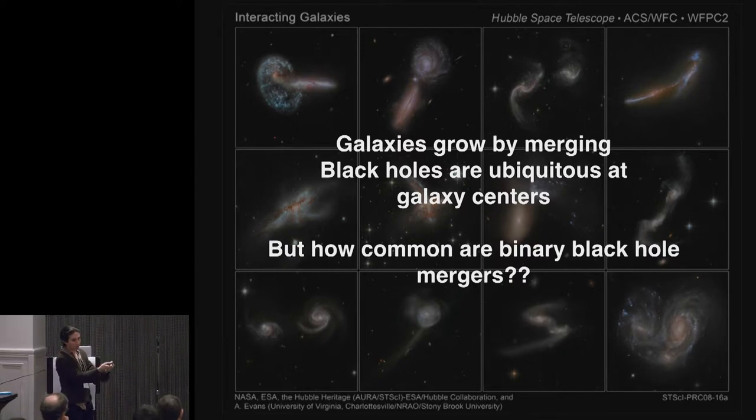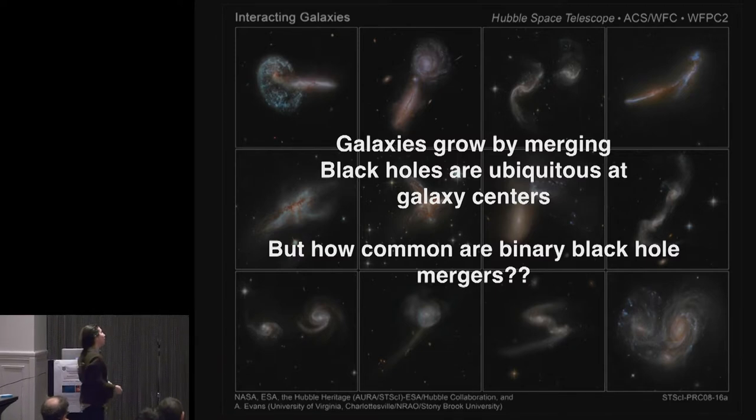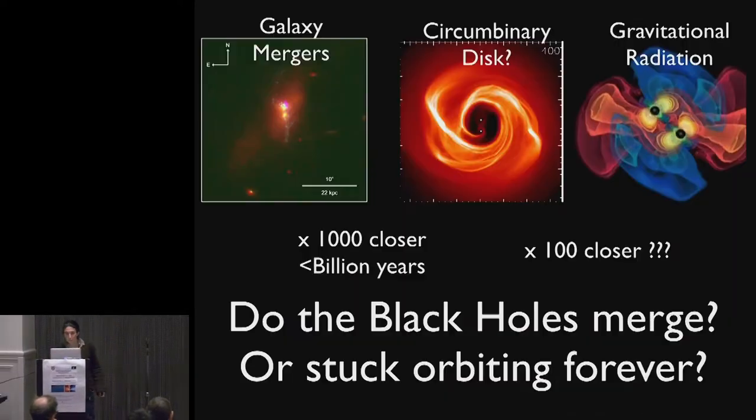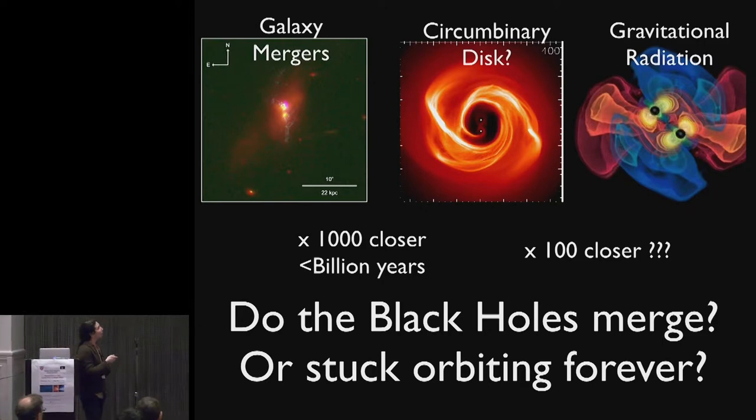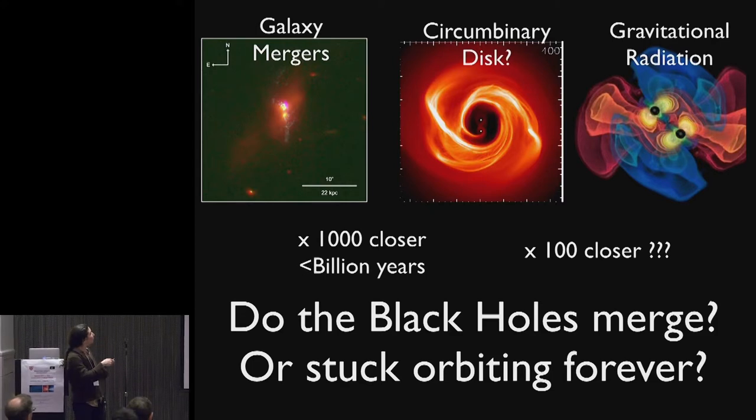And the embarrassing fact for astronomers is that we don't actually know whether these black holes can get close enough to make gravitational waves and merge. And the problem is that, okay, we know these galaxy mergers happen, and we know that by dynamical friction the black holes will relatively rapidly, 100 million years, billion years, sink to the centers of their galaxies and form a pair.